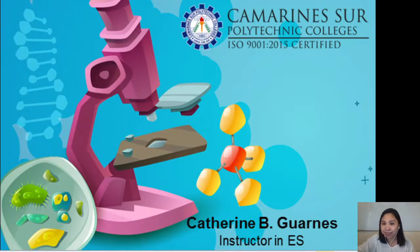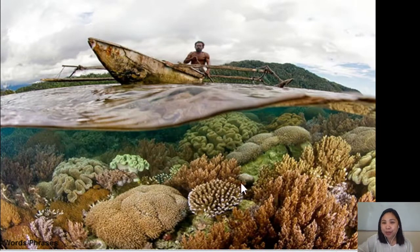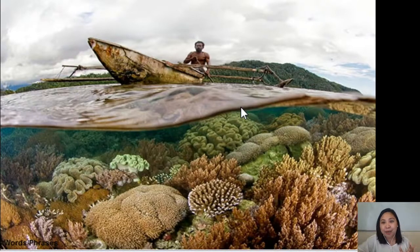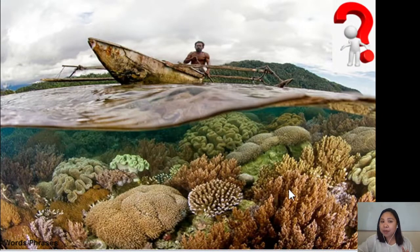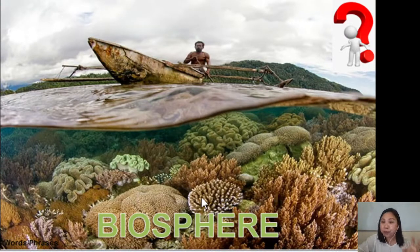To start with, I have here a picture. I would like you to think of a phrase or words that you can associate upon seeing this picture. I'll give you one minute to think about it. What can you say about this picture? I would like you to write it down on your notebook. Then, during our synchronous class, I'll be asking you about it. What are the words or phrases that you can associate with this picture? To give you an idea, this picture is all about biosphere. All the things that I am going to discuss in this video will be related to biosphere.